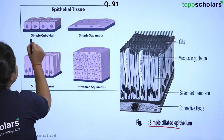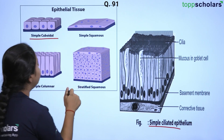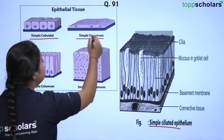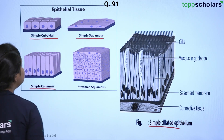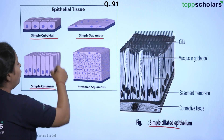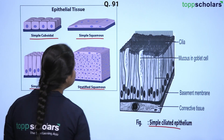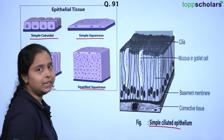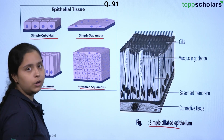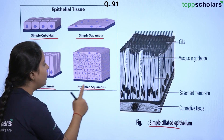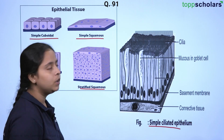Simple cuboidal — you can see cube-like cells arranged in a single layer. Simple squamous epithelium — the boundaries are irregular. Simple columnar epithelium — these are column-like cells arranged in a single layer. Stratified squamous epithelium — you can see many layers are present, these are stacked. Keep a note that stratified squamous epithelium has multiple layers, while the others have a single layer.